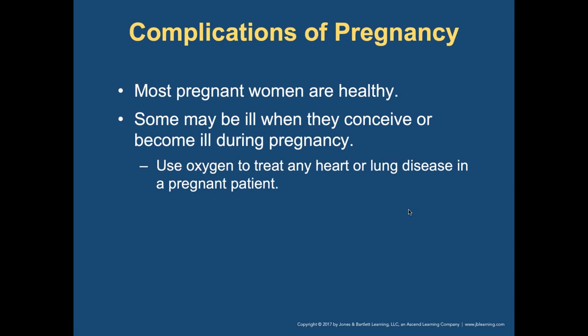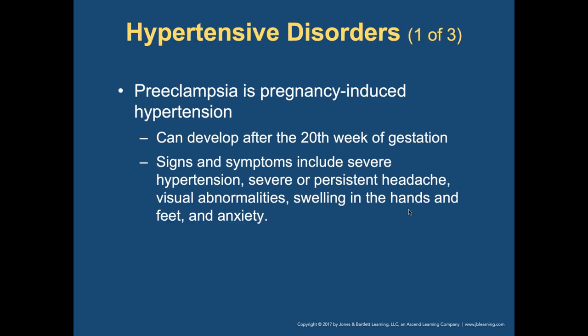Weight gain will change musculoskeletal demands on the heart. Increased hormones affect the joints, making them looser and less stable. Third trimester changes in the body's center of gravity increase the risk of slips, trips, and falls. Most pregnant women are healthy, but some will be ill when they conceive or become ill during pregnancy. You can always give oxygen since they're having difficulty breathing from the growing baby. You may come across gestational diabetes — diabetes that develops in women who have not had it previously.